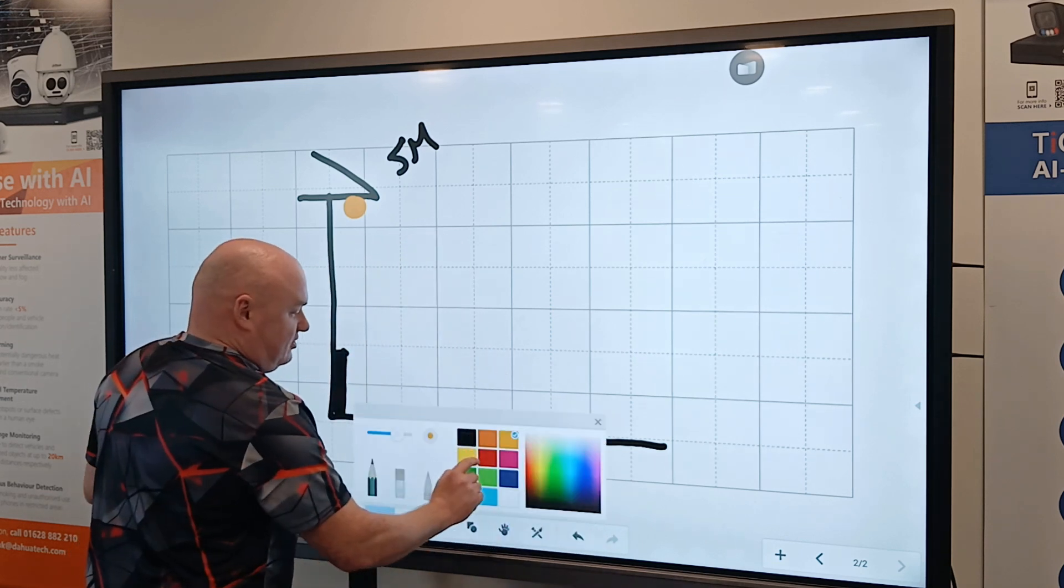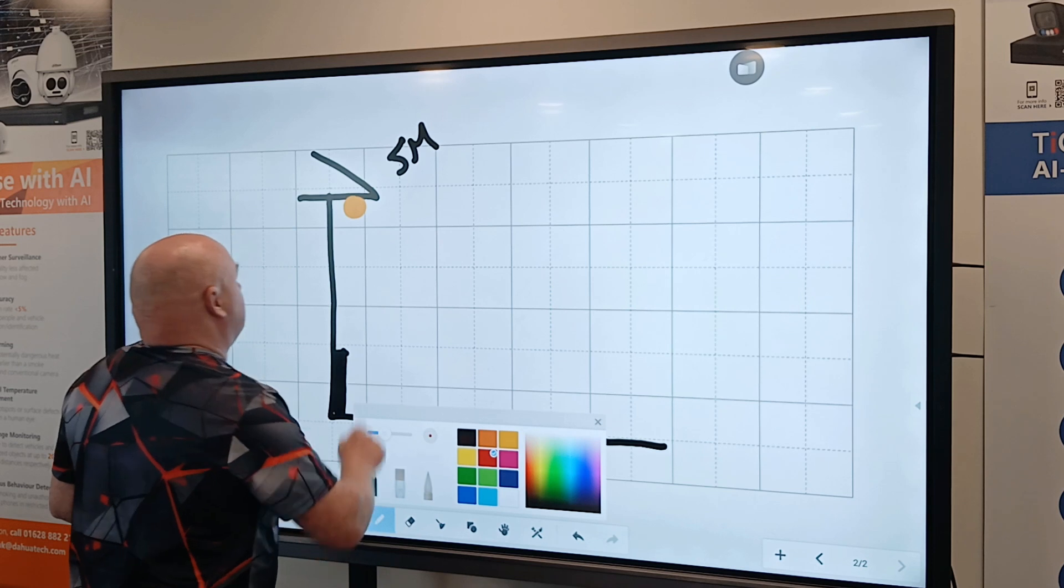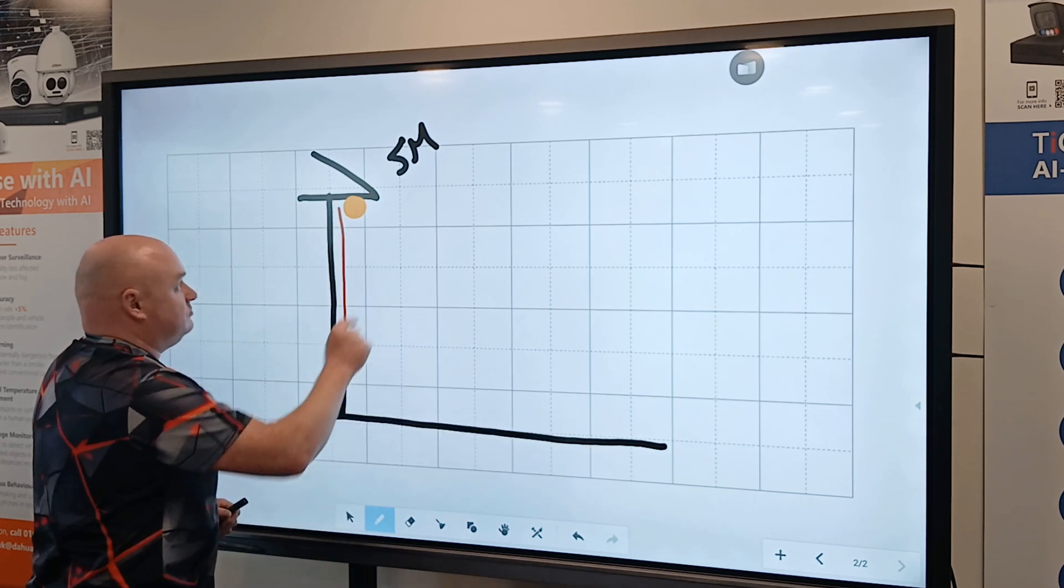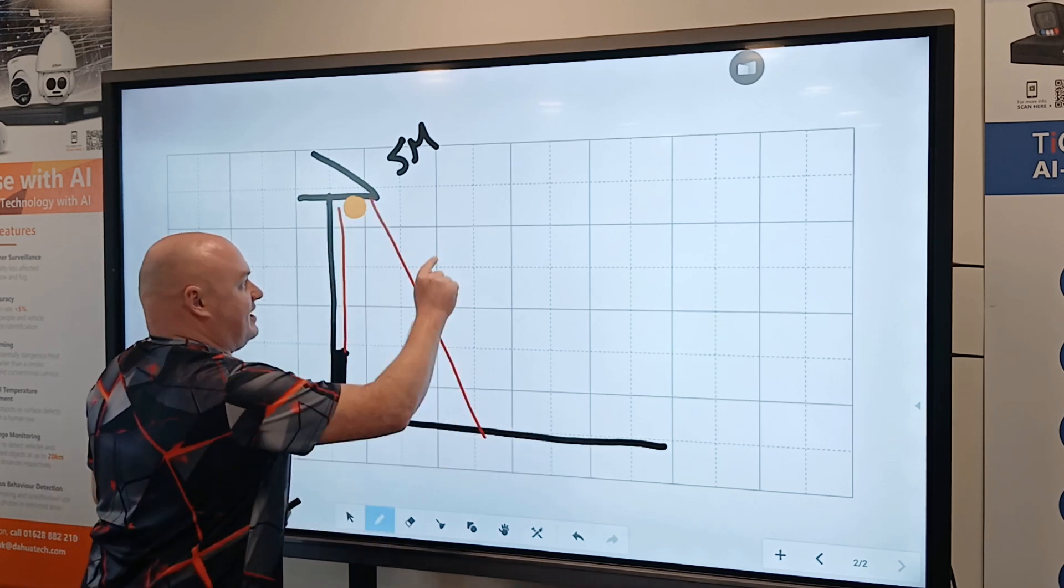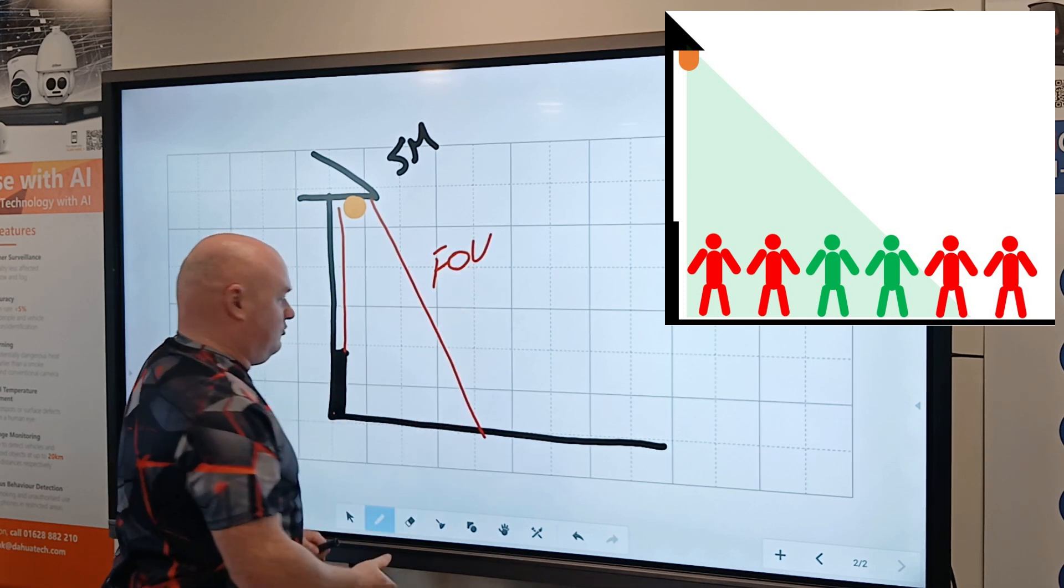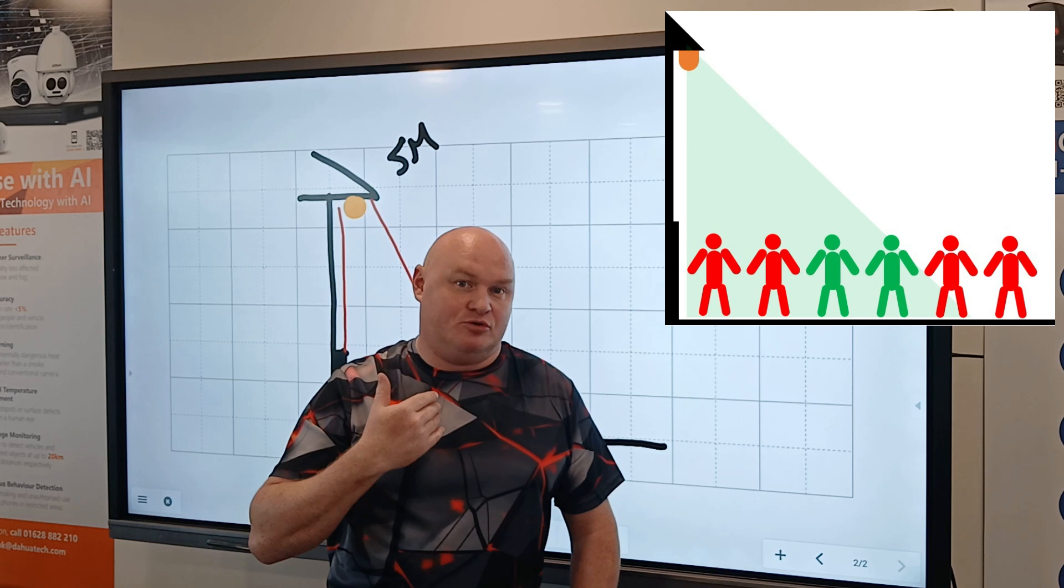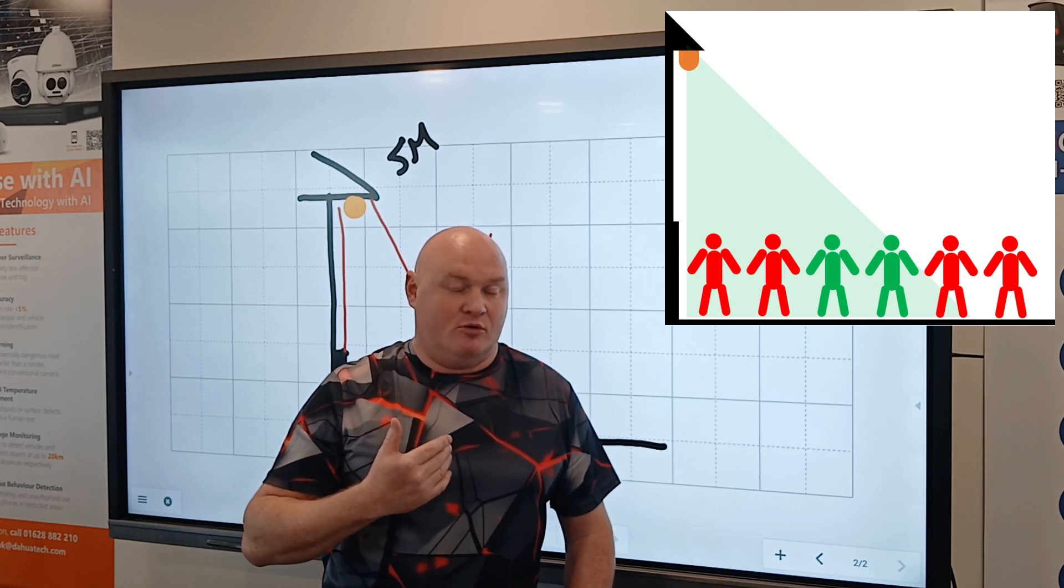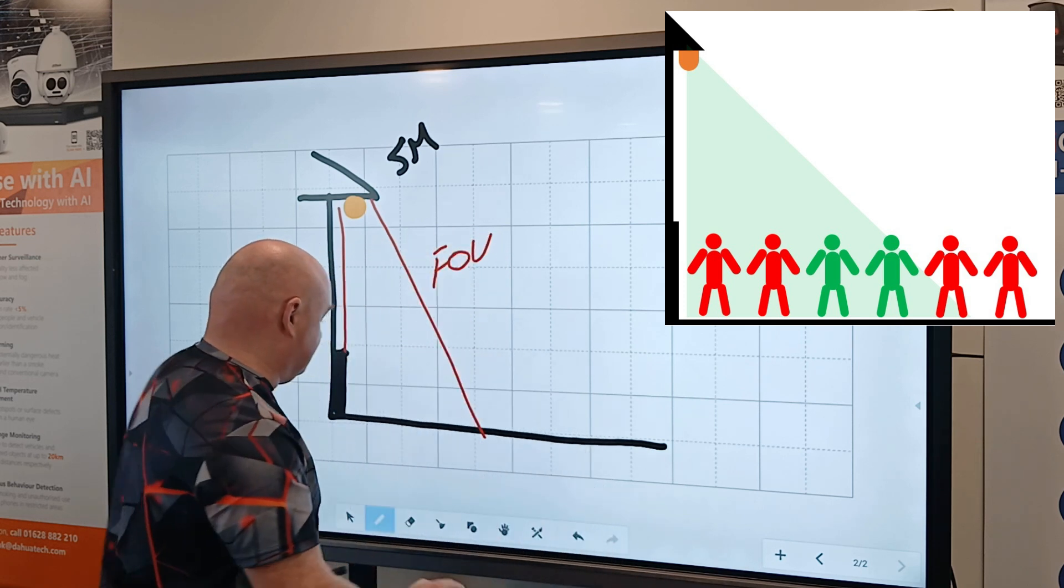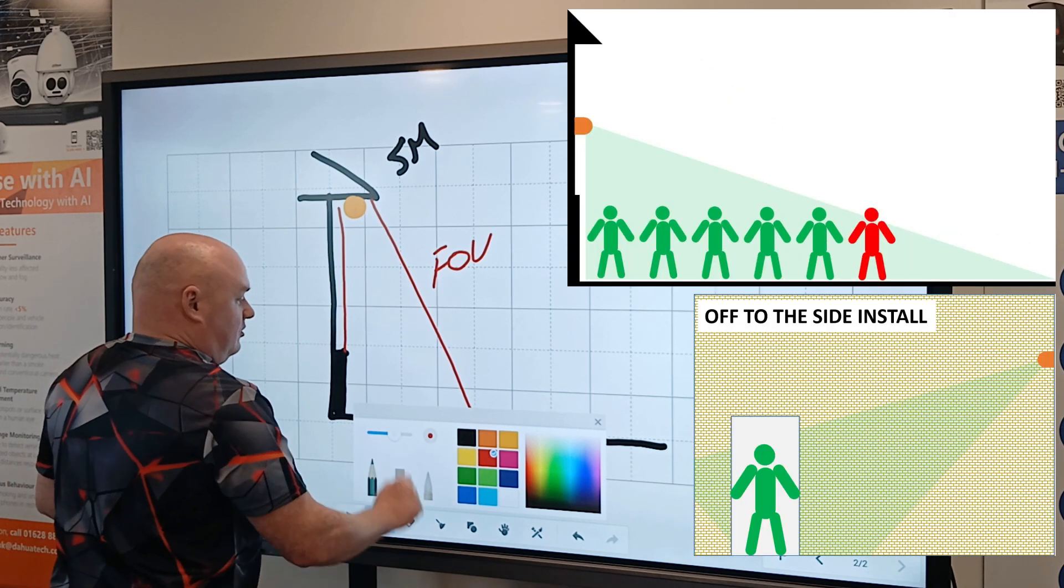Let's look at the actual field of view. So the field of view is going to be like this, FOV, which means that the actual target is going to be looking at the head and your shoulders. So the accuracy will not be great.